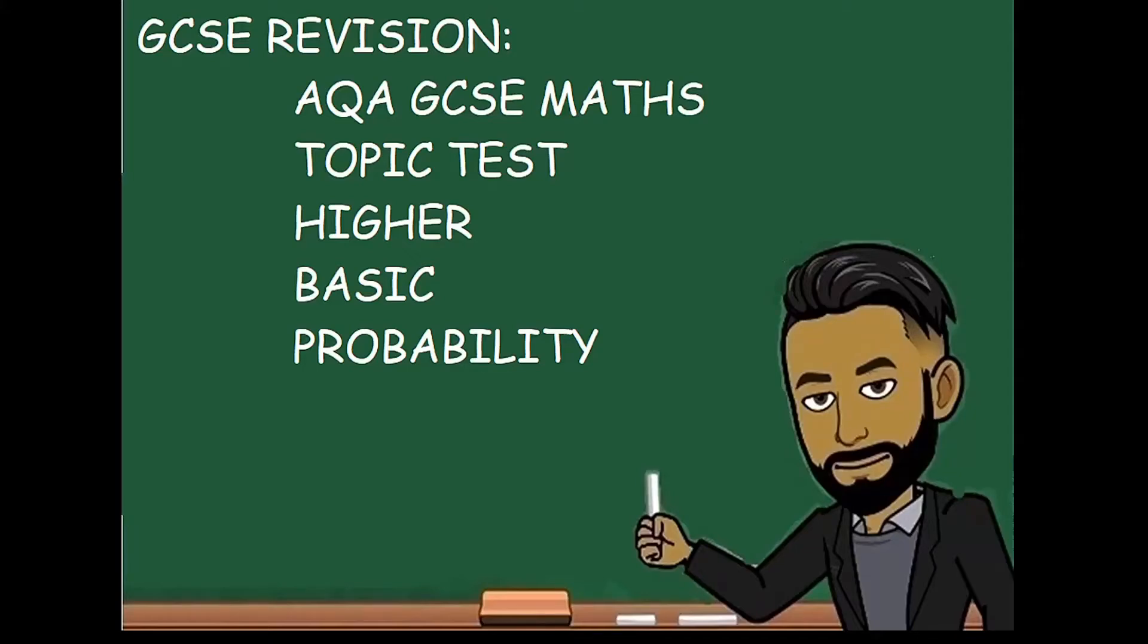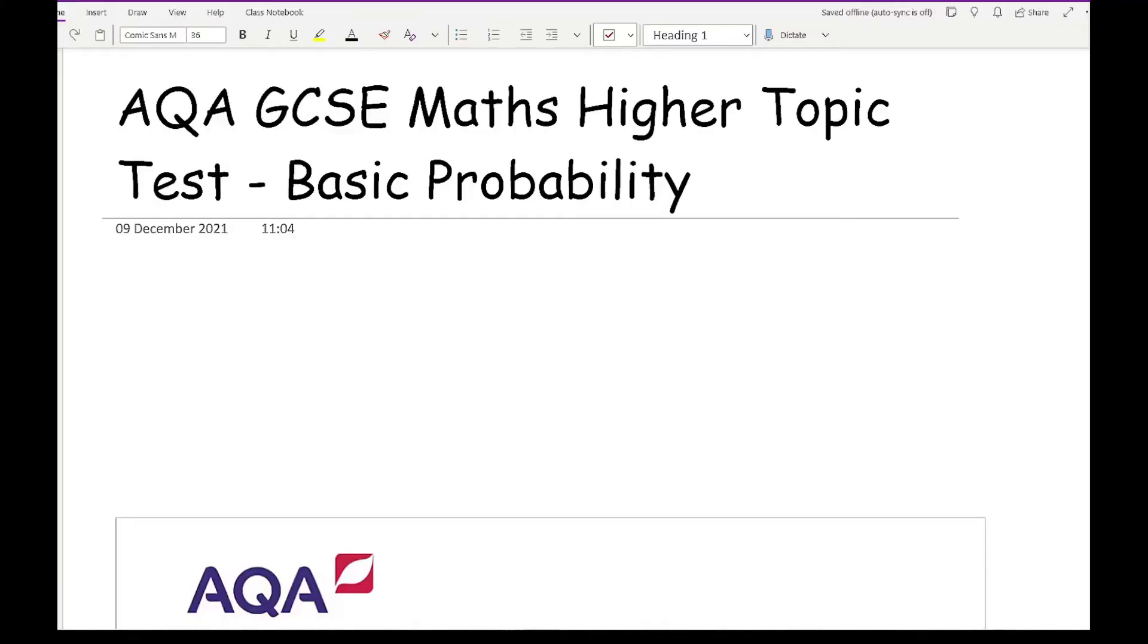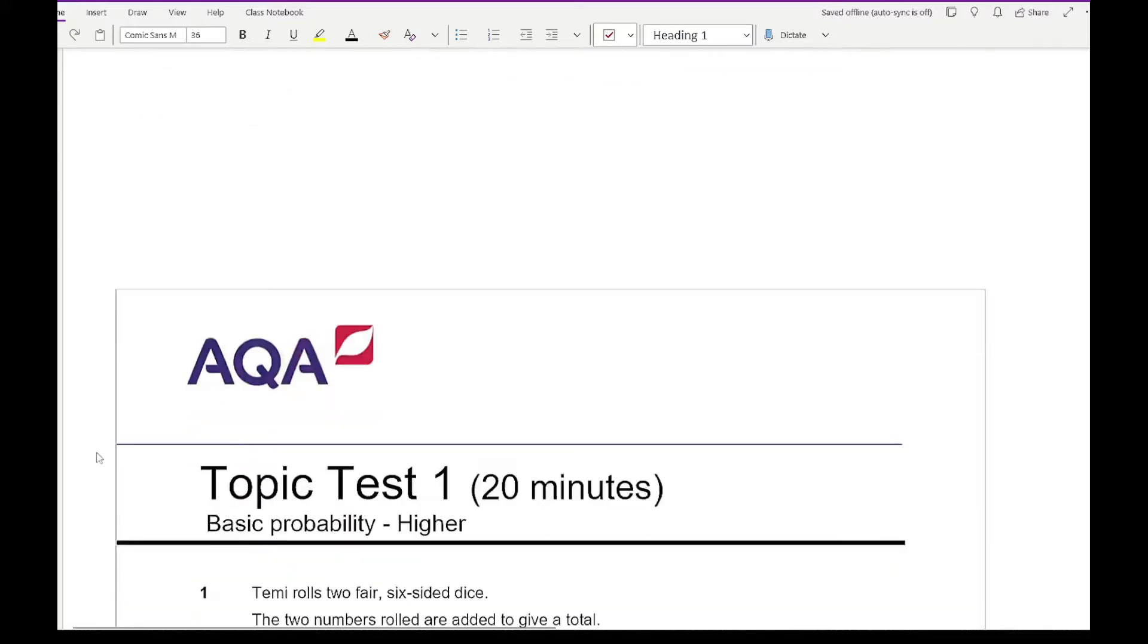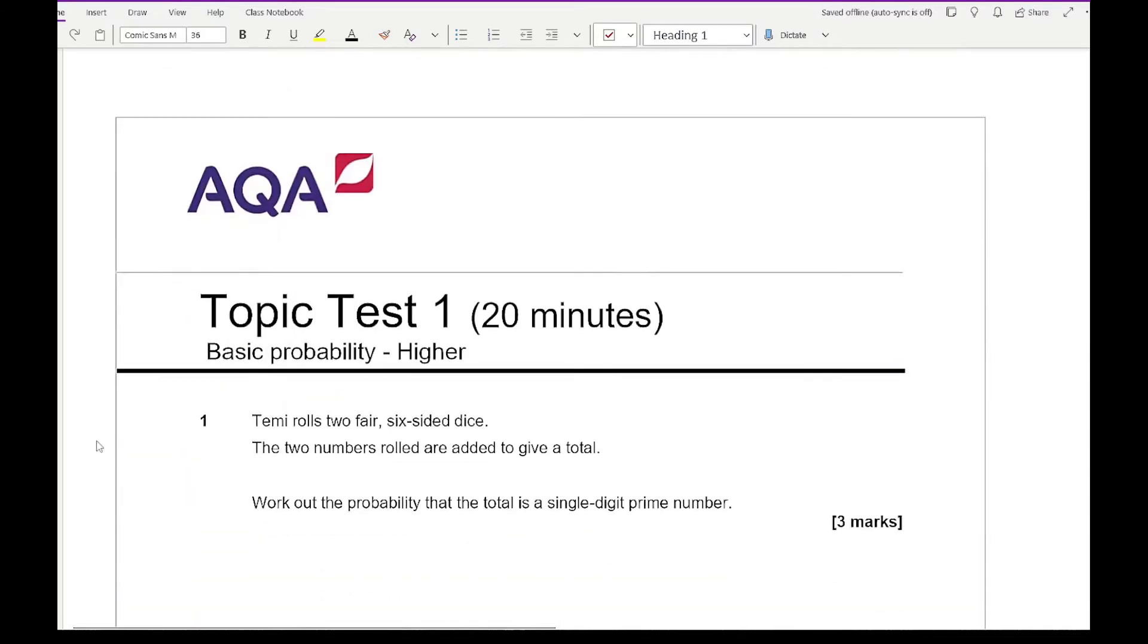Welcome everybody to this latest GCSE revision video, 162 Maths. In this video we'll be going over an AQA GCSE Maths topic test on the higher syllabus covering basic probability. There will be a copy of the questions in the description below, which I recommend you have a go at before watching this video and going through the answers. Let's get started on this basic probability higher level topic test. There's no indication that these questions are non-calculator or calculator, so we will try and avoid using a calculator where possible, but obviously we can use one.